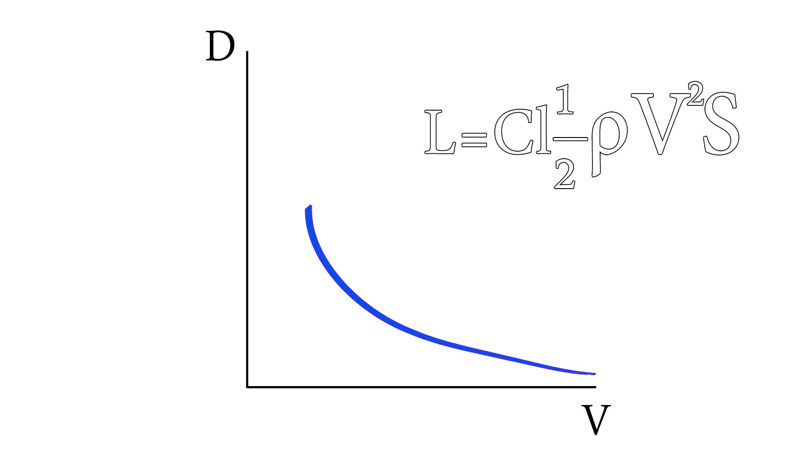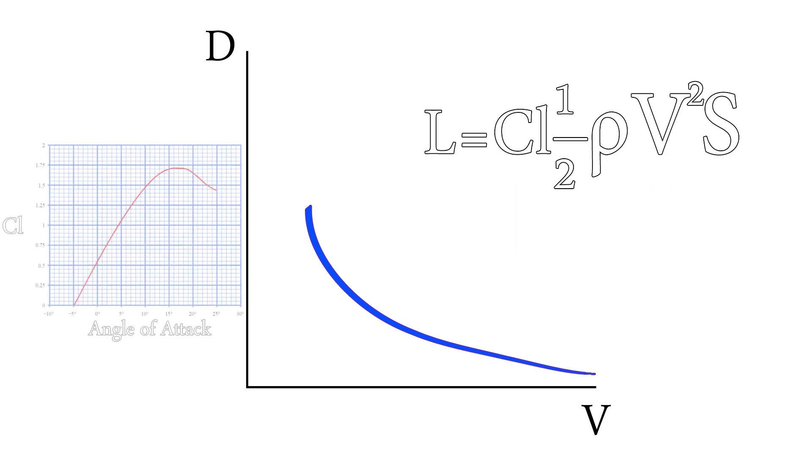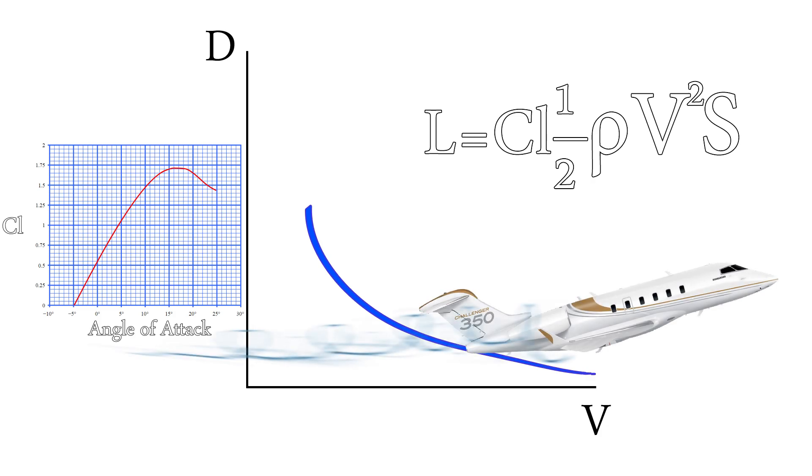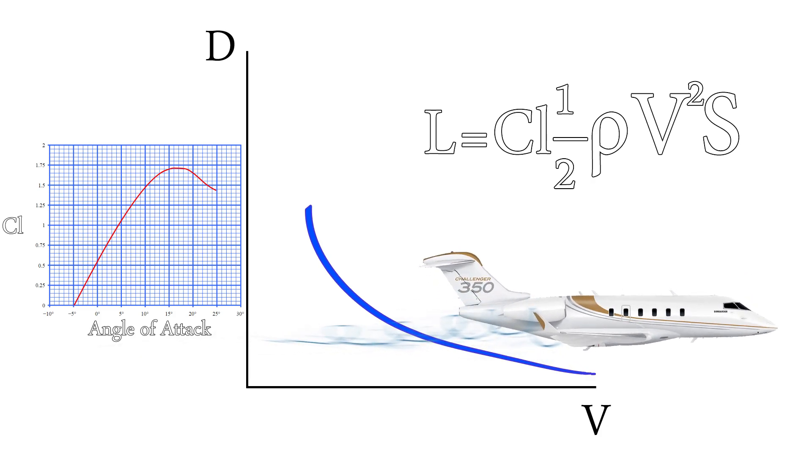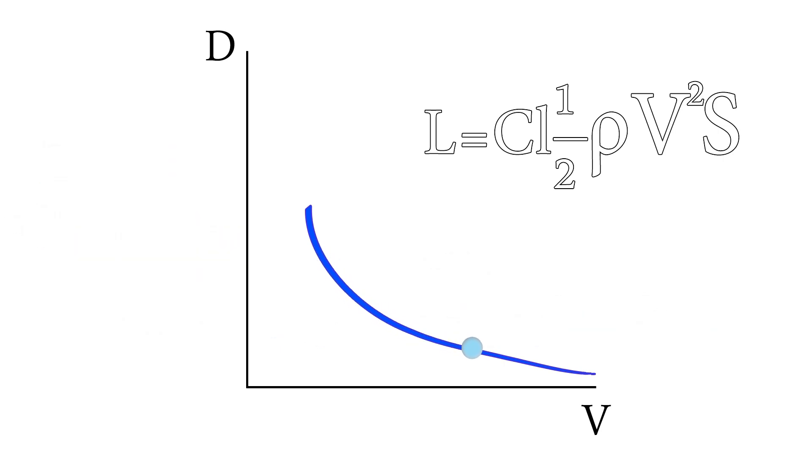So how does the induced drag change with velocity? Well, it does the exact opposite of the parasite drag, it reduces with speed. Since the lift formula depends on multiple factors among which there are the coefficient of lift and velocity, this means we can achieve the same amount of lift by reducing the coefficient of lift and increasing the speed. The coefficient of lift is dependent purely on the angle of attack, and as the pressure distribution around the wing is correlated with the angle of attack, the smaller the angle means less induced drag. So the faster we fly, the less drag we have due to the reduced angle of attack.